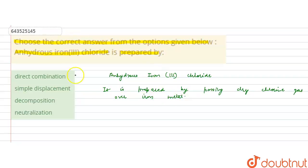The reaction can be represented as: iron metal (solid) plus chlorine gas (dry), passed and heated, forms FeCl3. It is prepared by passing dry chlorine gas over iron metal by heating.